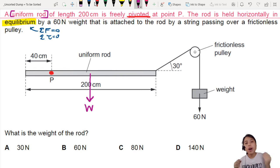Uniform means the weight of the rod will act on the center of gravity, which is right in the middle. So, this is weight. What is the weight of the rod? So, this is what we're trying to find. Okay, so how do we start? When it's in equilibrium, you want to think in equilibrium.